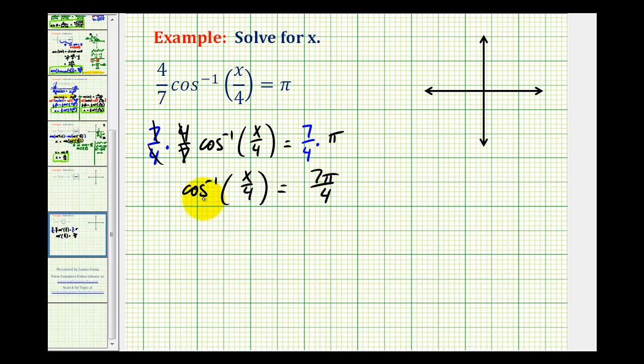Now we want to solve this equation for x, so we need to undo this inverse cosine function. We'll take the cosine of both sides of the equation.